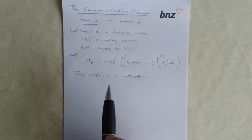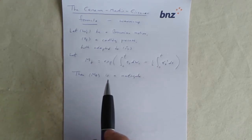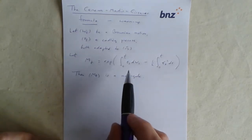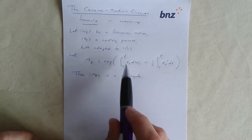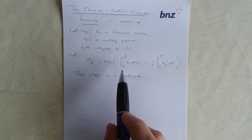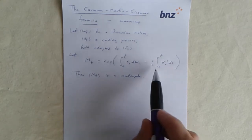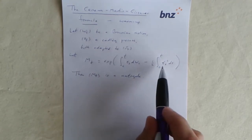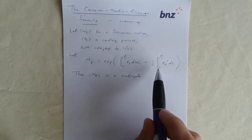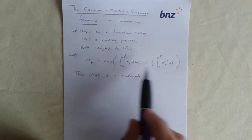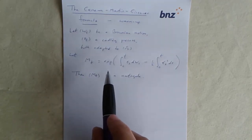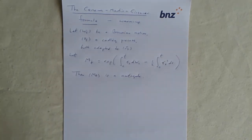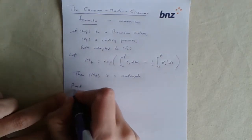Why would this be a martingale? The first thing to realize is that this is an Itô diffusion. We have a stochastic integral here, and we know that stochastic integral processes — the integral from zero to t — give you another Itô diffusion. We also have an ordinary integral, which gives you a finite variation process; it's like an Itô diffusion with no speed. That makes the whole thing inside the brackets an Itô diffusion. Then we take the exponential, and by Itô's lemma, a smooth function of an Itô diffusion is another Itô diffusion.